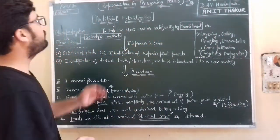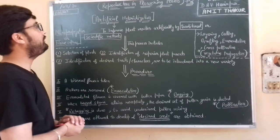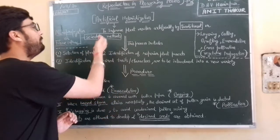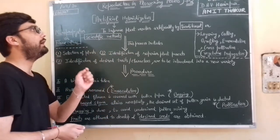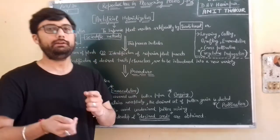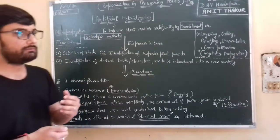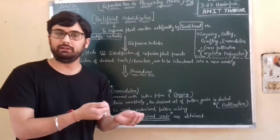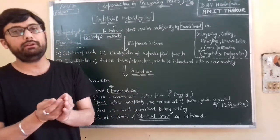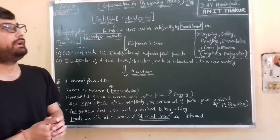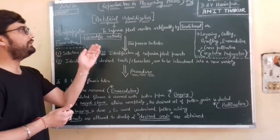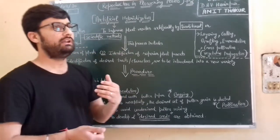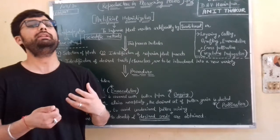Welcome back students, so today we're going to start the last topic of chapter reproduction in flowering plants. The topic is artificial hybridization. Artificial hybridization means how to improve the plant varieties through different methods, and when it comes to artificial hybridization, whenever we use the word artificial, it means it is done with human efforts.